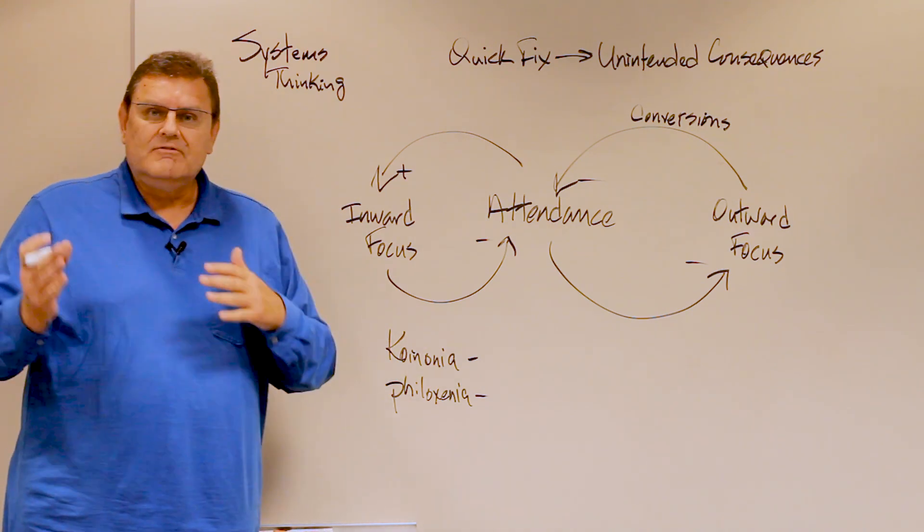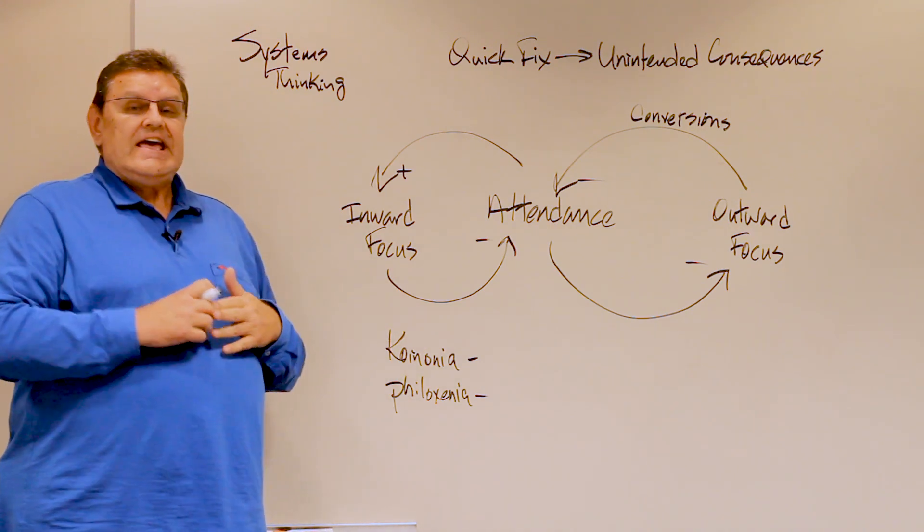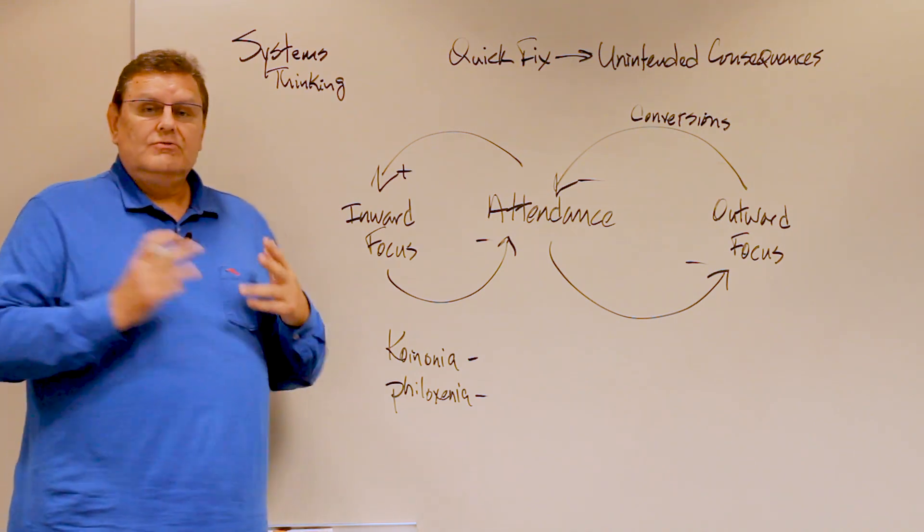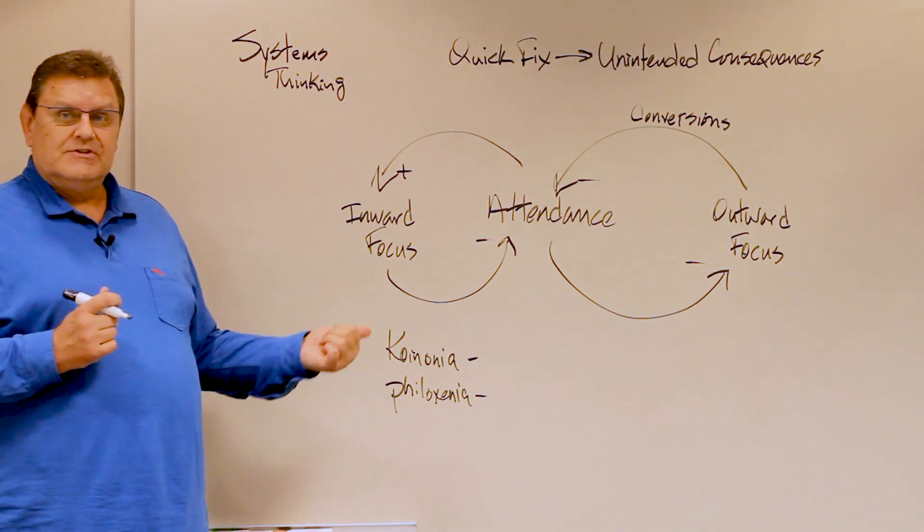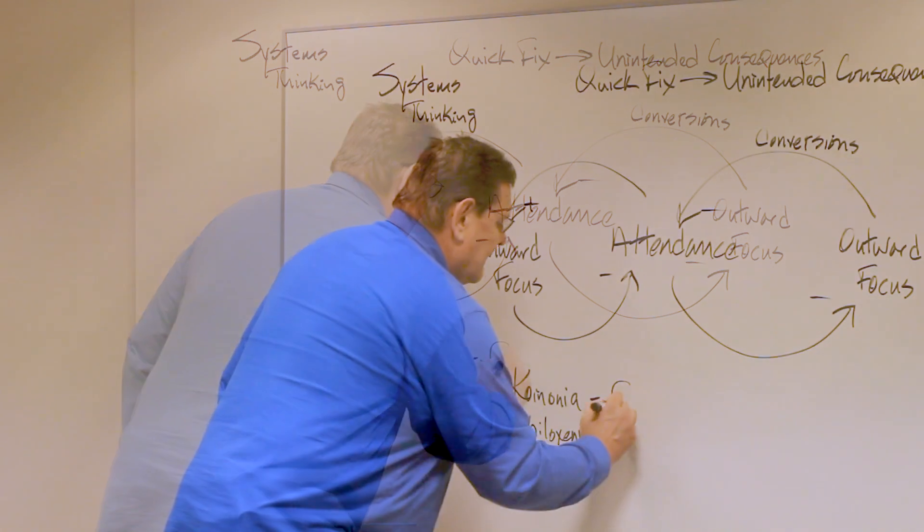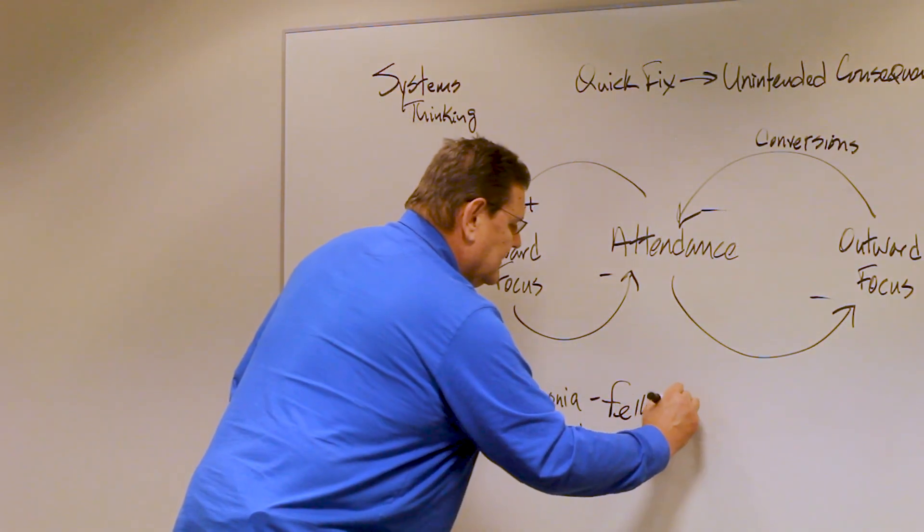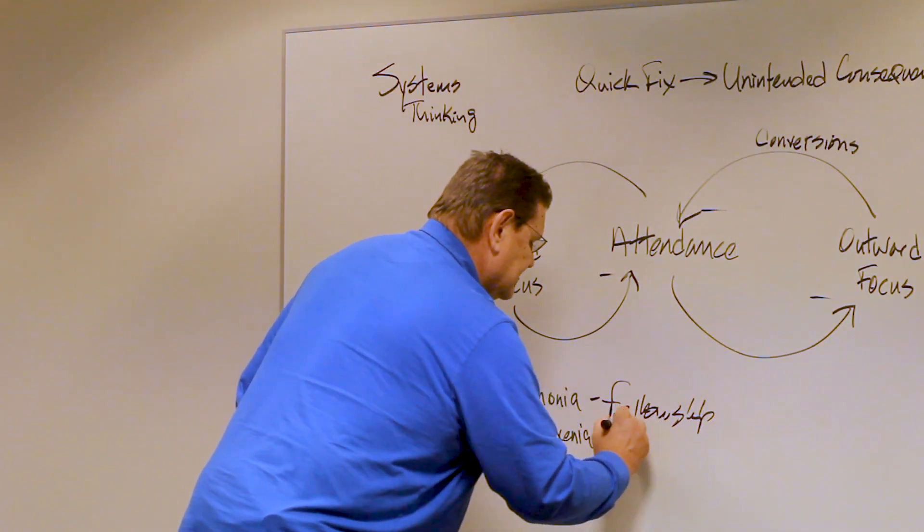So let me give you one more layer of this. Here's how this works biblically. Two key words: koinonia, which is fellowship, and phylloxenia, which is hospitality.